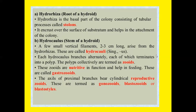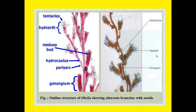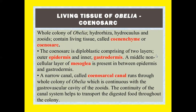The zooids are nutritive in function and help in feeding; these are called gastrozooids. The proximal branches bear cylindrical reproductive zooids termed gonozooids, blastozooids, or blastostyles. All colony parts — hydrorhiza, hydrocaulus, and zooids — contain living tissue called coenosarс. The coenosarс is diploblastic, comprising two layers: outer epidermis and inner gastrodermis, with a middle non-cellular mesoglea between them. A narrow canal called the coenosarcal canal runs through the whole colony, continuous with the gastrovascular cavity of the zooids, helping to transport digested food throughout the colony.